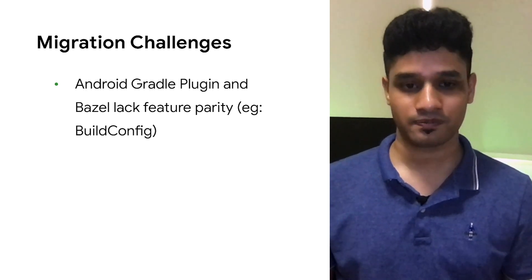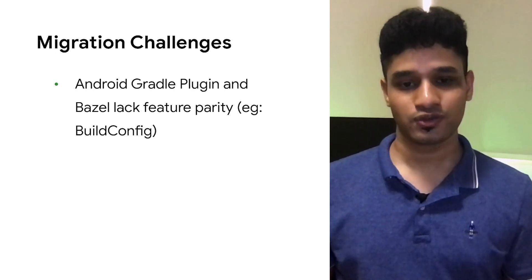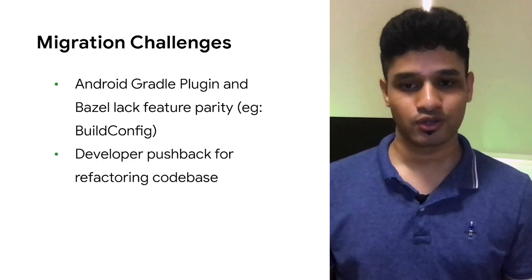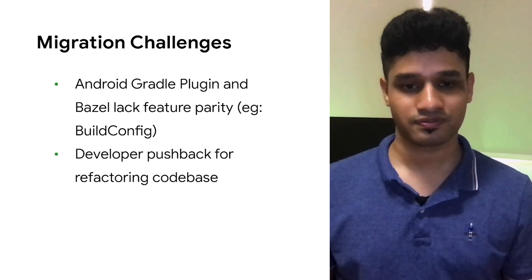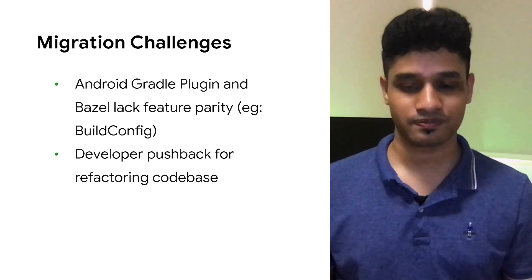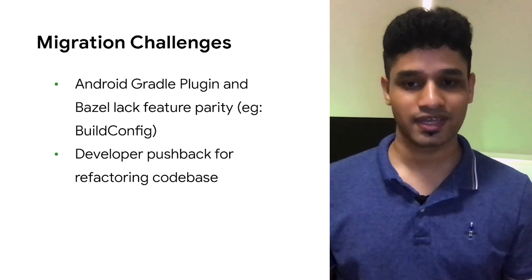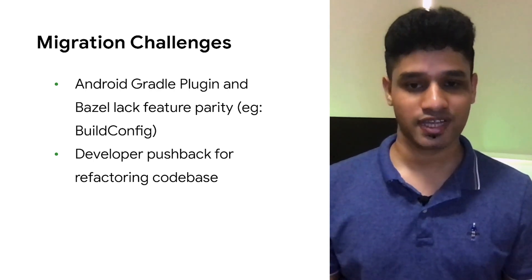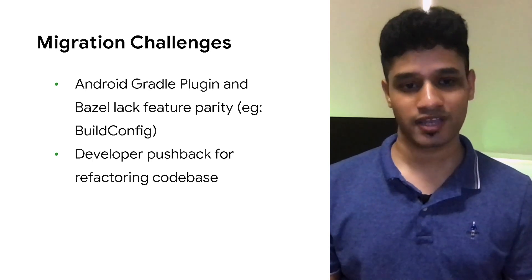Similarly, we have native build rules in Bazel. So when we use an exclusive build system feature, we might need to spend additional time refactoring the codebase to make it compatible with both build systems. For example, build config fields in Android Gradle plugin provide a neat way to inject values into the runtime, and this is not something present out of the box in Bazel. However, it can be easily achieved with a custom macro that we can build. So when we talk about such refactoring tasks, naturally this takes effort from feature development and there was pushback from engineers because this effort could instead be spent on feature development.